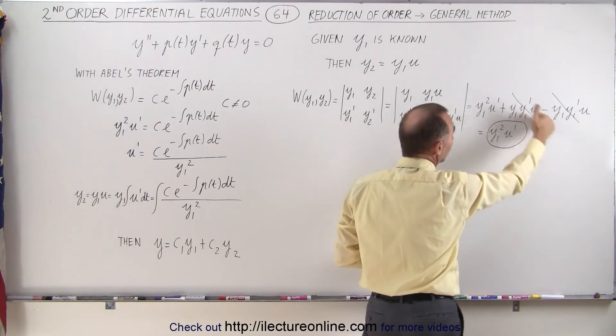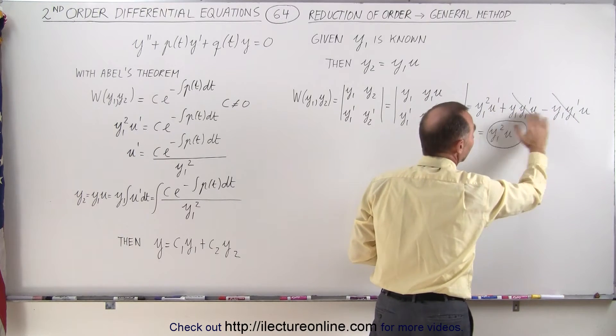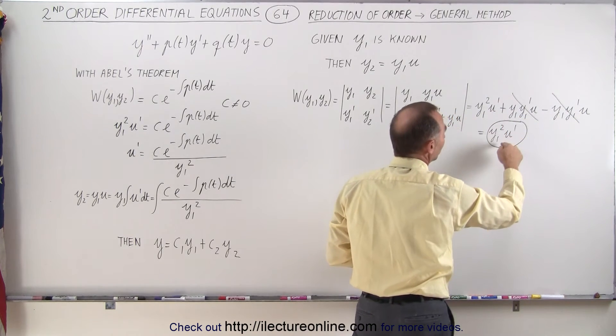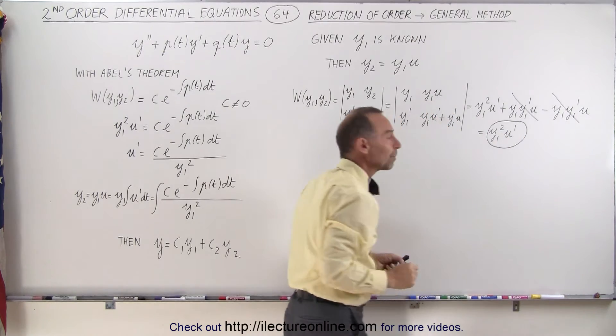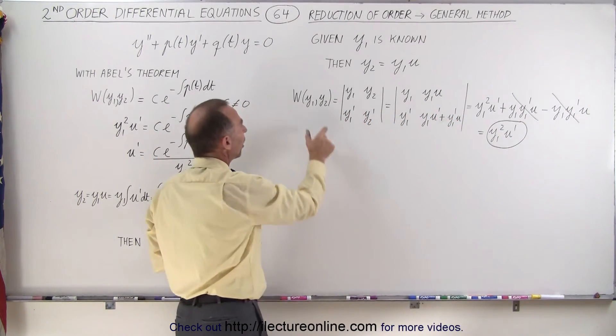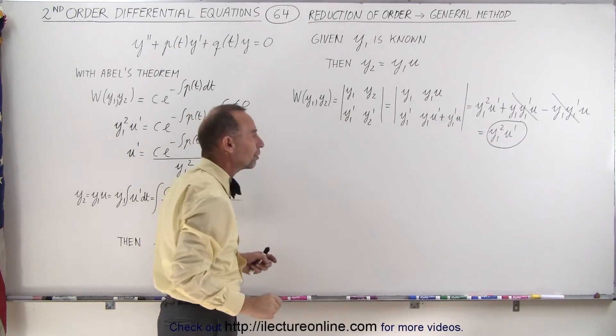And notice, of course, that these two terms are equal to each other, so they cancel out, and then we're simply left with y1 squared times u prime. So that's the Wronskian of the two solutions y1 and y2.